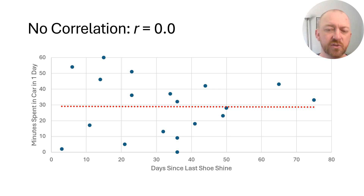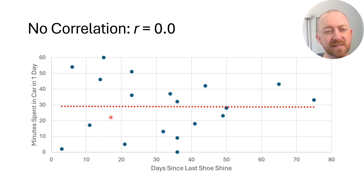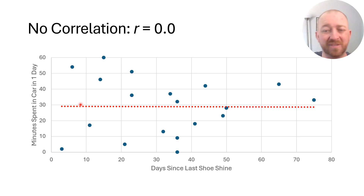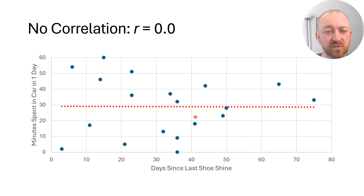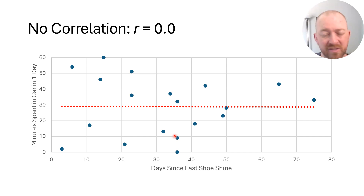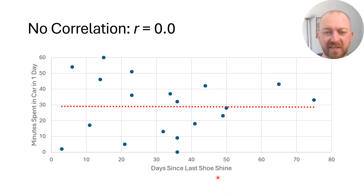Now let's look at no correlation. There are two indicators: the best-fit line is perfectly horizontal — no slope, neither positive nor negative. Additionally, the dots are very spread out from that line, indicating a very weak or unreliable correlation — a very noisy pattern. For example, days since your last shoe shine and minutes spent in a car in one day probably have no real-world correlation either.